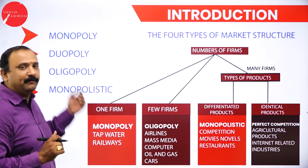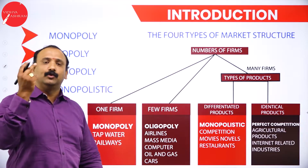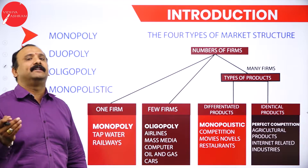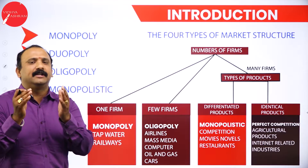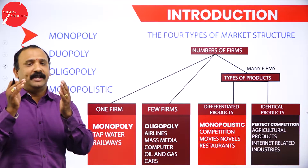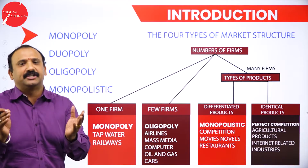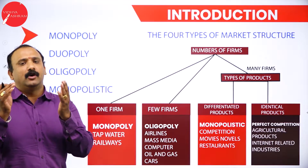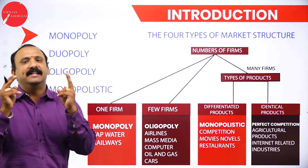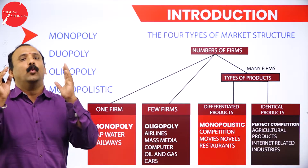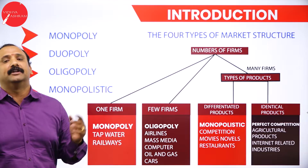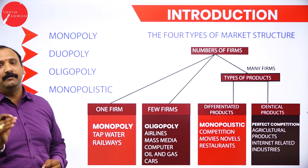Duopoly means there are two sellers in the market who try to dominate the price. There is very limited availability of options to the consumer. In this situation the consumer will not have much choice — only the two sellers dominate the entire market.